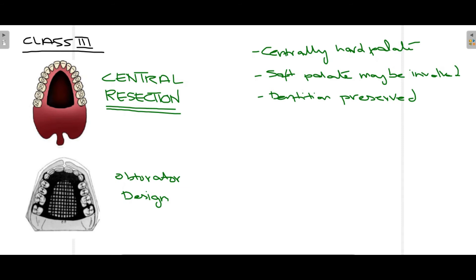Class 3 is central resection. As seen in the diagram, this is the hard palate and some part of the soft palate. Centrally, this entire area is resected. The hard palate is centrally resected and some part of the soft tissue may or may not be involved depending on the pathology that led to the maxillectomy. An important point in Class 3 is that dentition is preserved — all teeth are present and none are removed. For the obturator design, support is taken from the remaining teeth as abutments and the defect is closed.